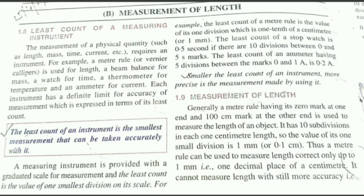For physical quantities like length, mass, time, current, etc., we need an instrument. For example, for length we have a meter rule, for mass we have a beam balance, for time we have a watch, for temperature we have a thermometer. Every physical quantity requires an instrument.